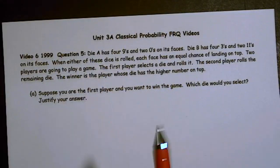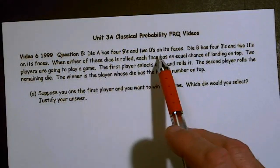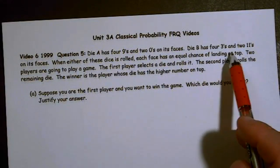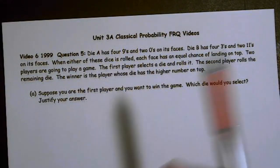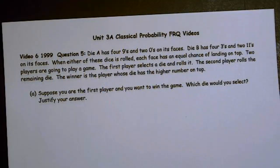You usually should make a sample space if you're doing something twice or have two variables. Here we're rolling two dice. Die A has four nines and two zeros on its faces. Die B has four threes and two elevens on its faces. When either of these dice is rolled, each face has an equal chance of landing on top.